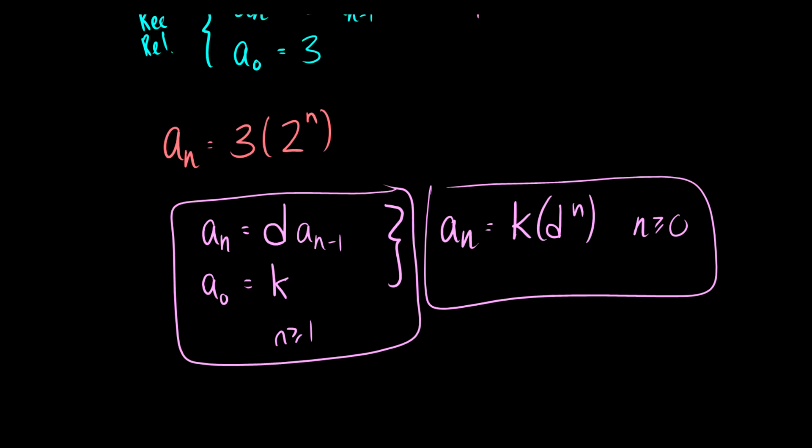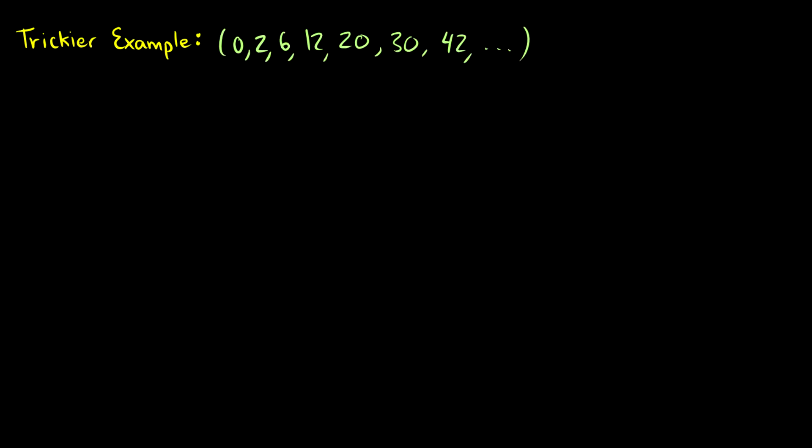So that's great. But what can happen is we can get some more tricky examples. So for instance, this sequence 0, 2, 6, 12, 20, 30, 42. I hope you can see the pattern just by looking at it.